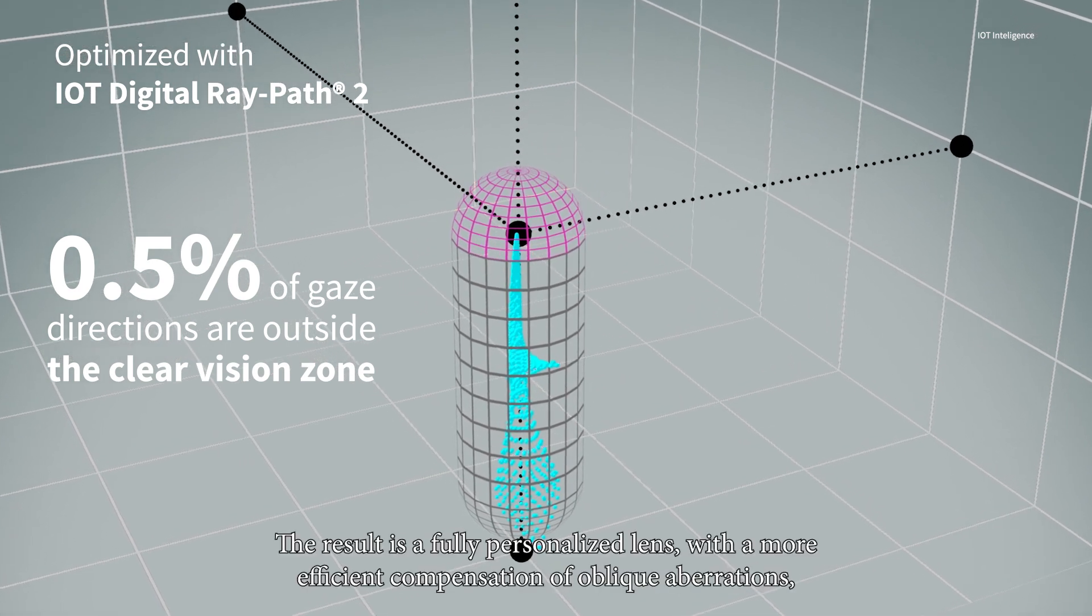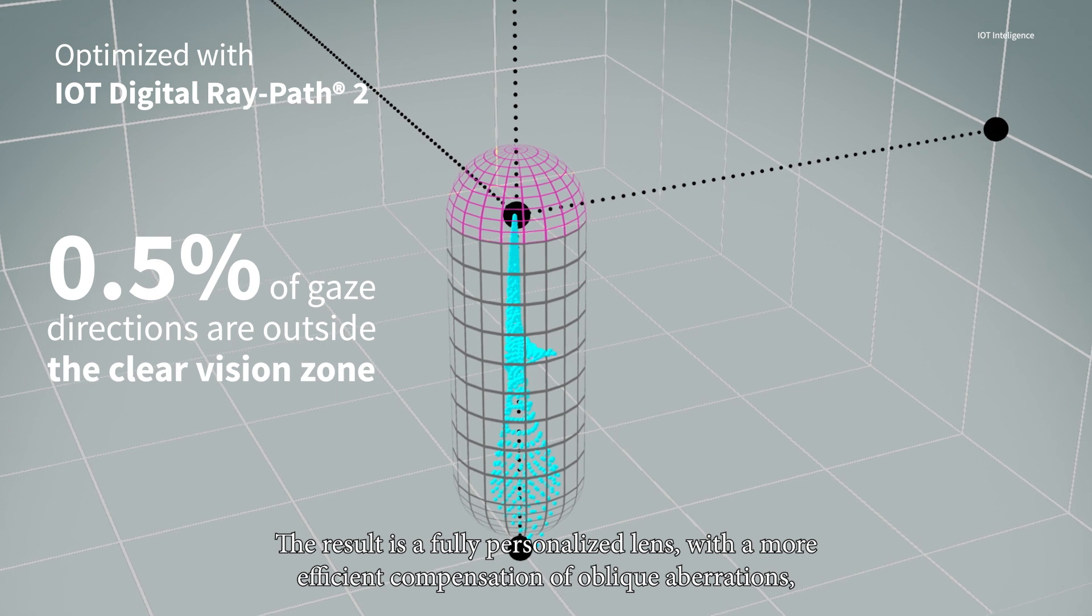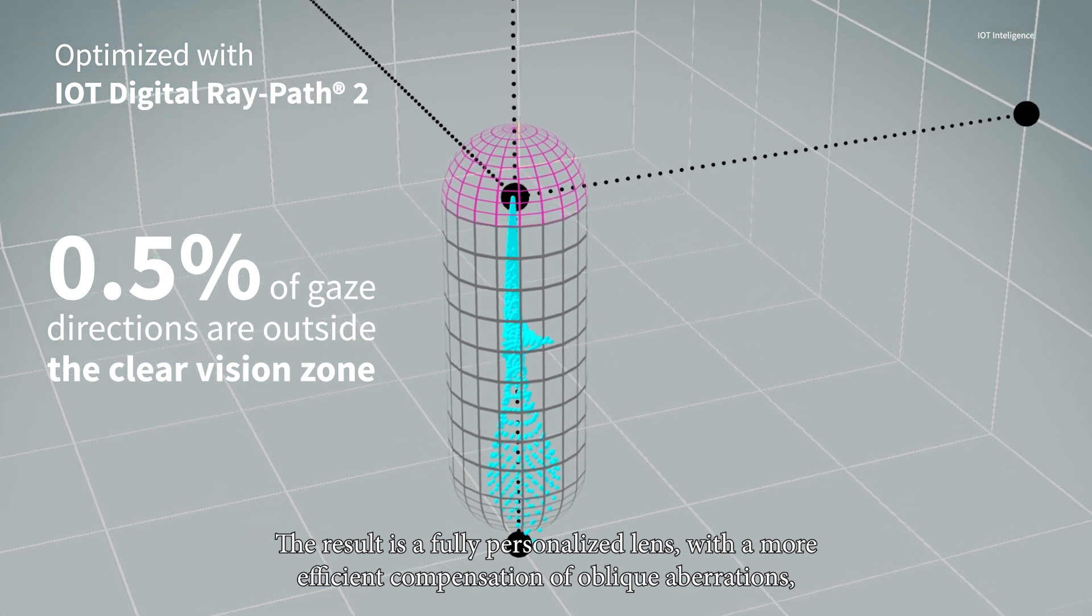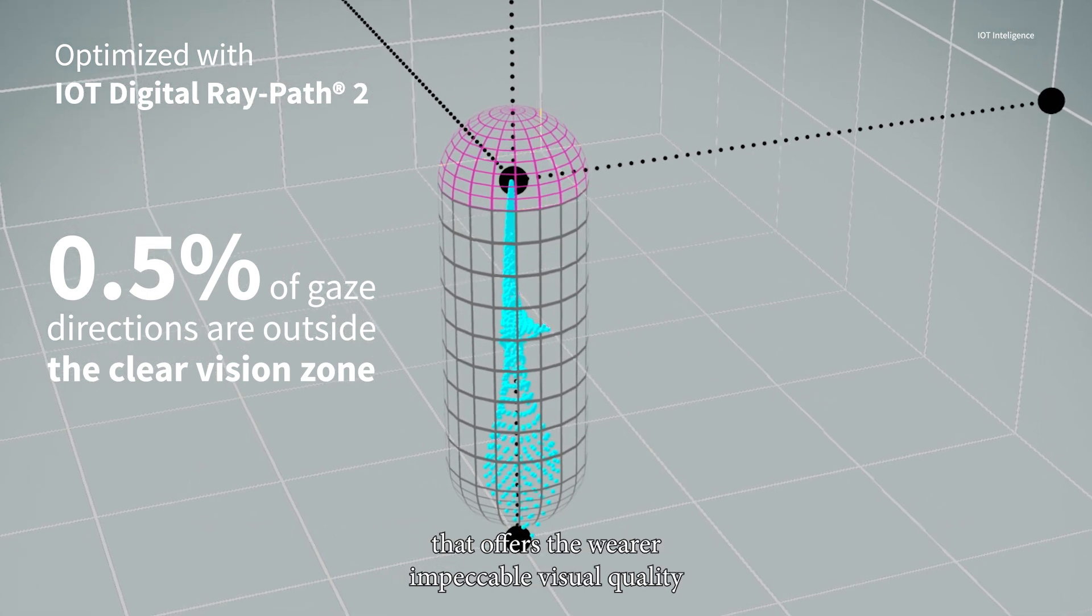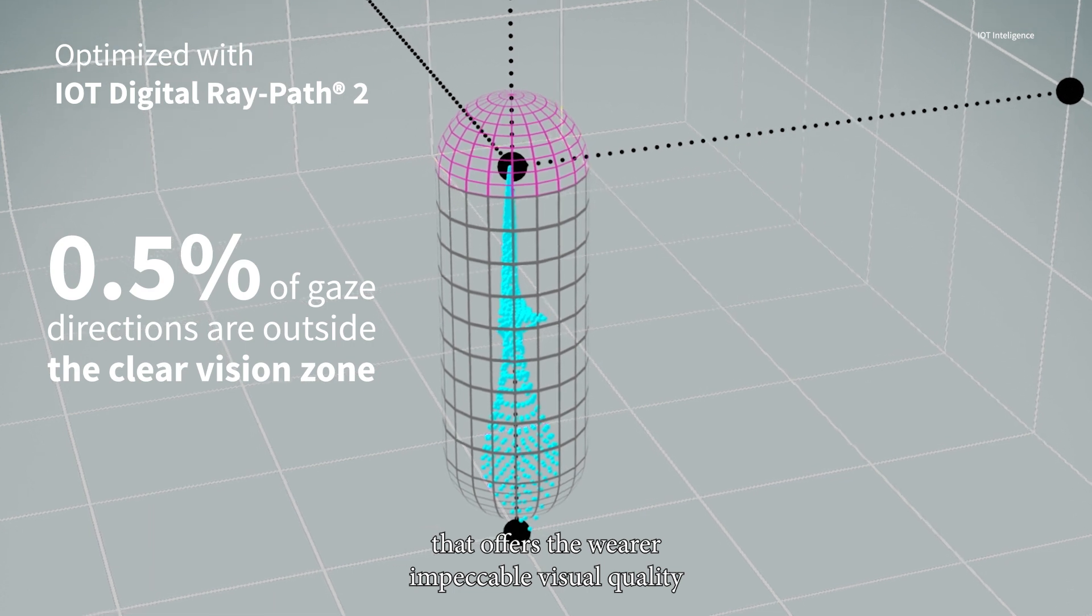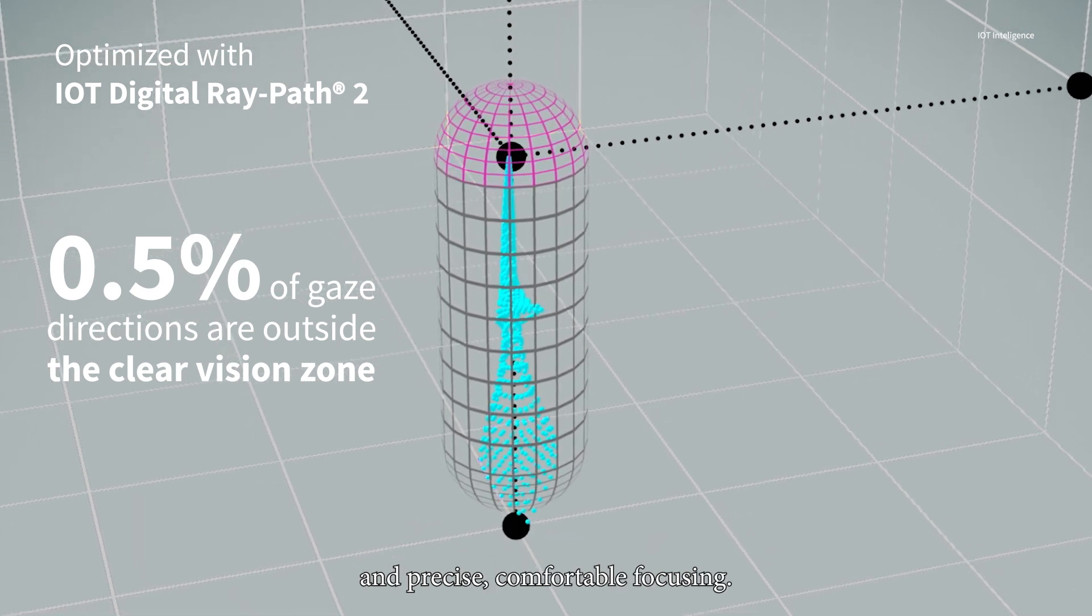The result is a fully customized lens with a more efficient compensation of oblique aberrations that offers the wearer impeccable visual quality and precise, comfortable focusing.